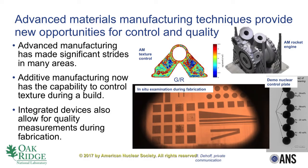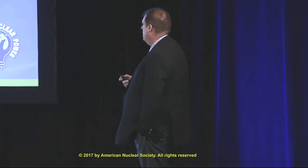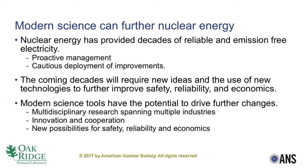Can you take this into nuclear? Probably. What just appeared on the right is a demo piece for an actual production 3D print of a control plate for the High Flux Isotope Reactor at Oak Ridge National Laboratory — not full scale, but a demo that the technology is there. With that, let me finish and state that modern material science can further nuclear energy. We've got decades of reliable emission-free electricity, but through proactive management and cautious deployment of improvements, we have the opportunity to take modern material science ideas and use these new technologies to further improve safety, reliability, and economics. Thank you very much.